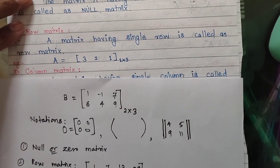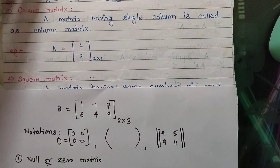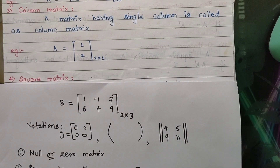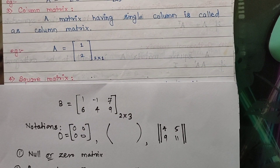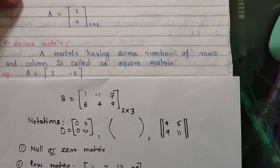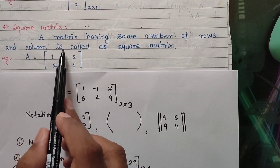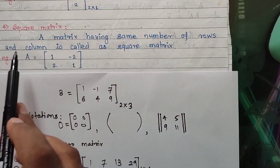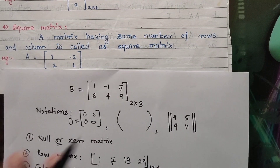The next definition is of square matrix. A square matrix is a matrix whose number of rows and number of columns are the same. A matrix having the same number of rows and columns is called a square matrix. Very simple definition.